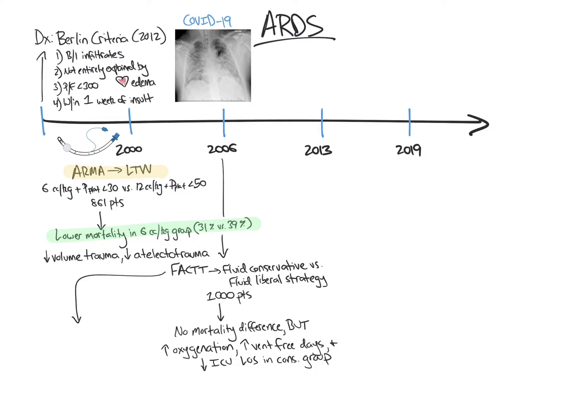Overall, FACTT provides evidence that a dry lung is a happy lung, and we should strive for a net even to slightly negative fluid balance in patients with ARDS that are not in shock. To recap, the FACTT trial assessed a fluid conservative vs. fluid liberal strategy. The fluid conservative strategy was associated with improved oxygenation, less time on the ventilator, and less time in the ICU.